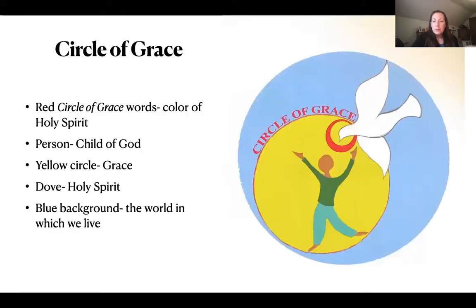When we're talking about the Circle of Grace, this is the symbol that represents it, and there are different parts of this that we're going to break down. The red lettering where it says 'Circle of Grace' represents the color of the Holy Spirit — red is the color of the Holy Spirit. The person is the child of God, and you and I and all of us are children of God. The yellow circle represents grace, the dove represents the Holy Spirit, and the blue background is the world in which we live.